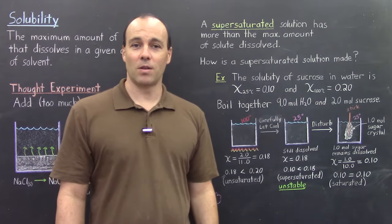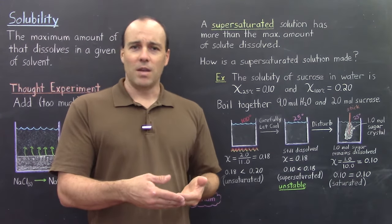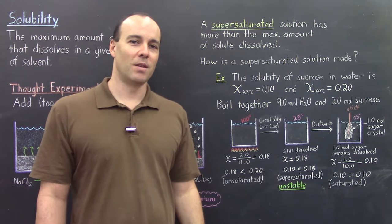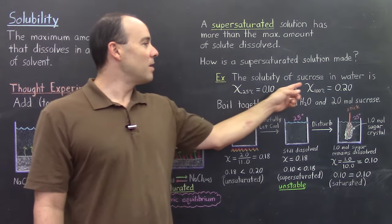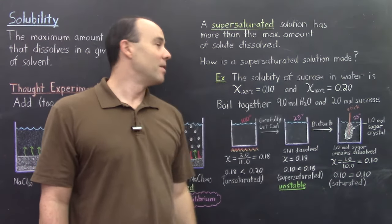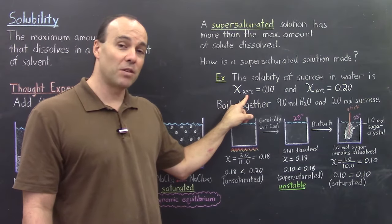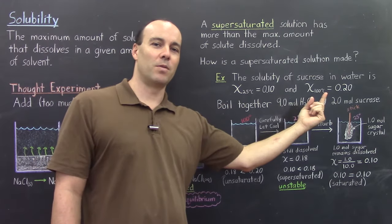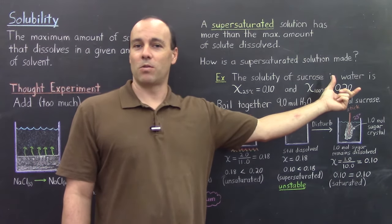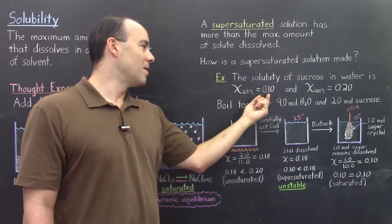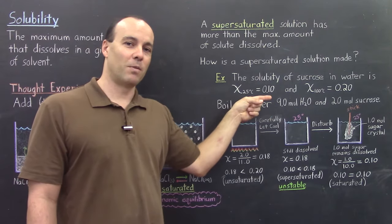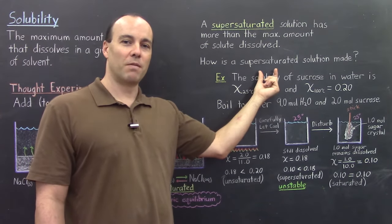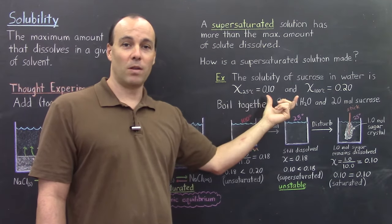We can do this with sugar and water — the solubility of sugar increases with temperature. The solubility of sucrose (table sugar) in water is a mole fraction of 0.1 at 25°C and 0.2 at 100°C, so the mole fraction doubles going from room temperature up to the boiling temperature of water. Mole fraction is the number of moles of solute over the total number of moles in solution. So a mole fraction of 0.1 means there is 0.1 mole of sucrose for every one mole total of the solution.